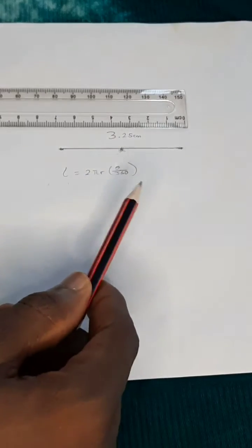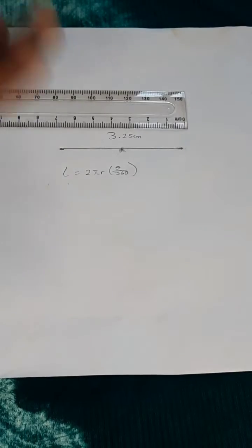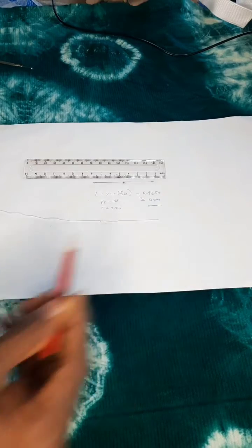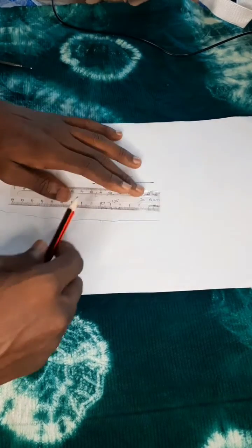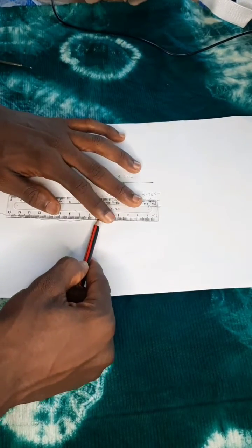After finishing your calculations, you got six centimeters, but you might get something else. Now mark that six centimeters exactly on your ruler, mark that on the thread, and cut at that exact point.